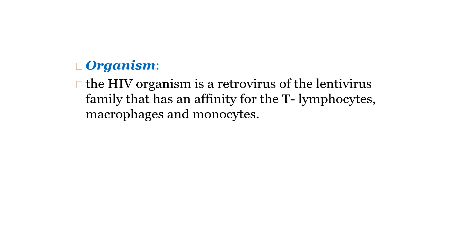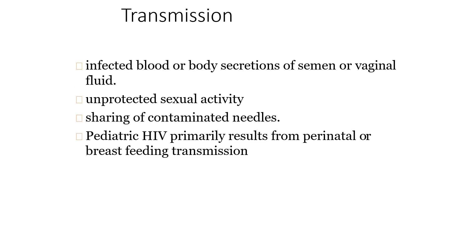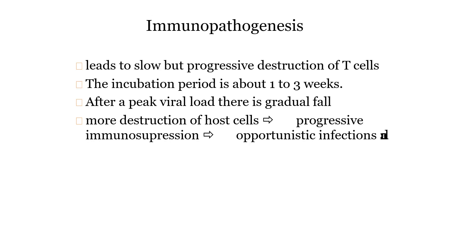HIV has affinity towards T-lymphocytes, macrophages, and monocytes. Transmission occurs through infected blood and body secretions like semen and vaginal fluid, through unprotected sexual intercourse, and sharing of contaminated needles. Pediatric HIV primarily results from perinatal transmission — during the time of delivery, it may transfer from the mother to the baby, or during breastfeeding.